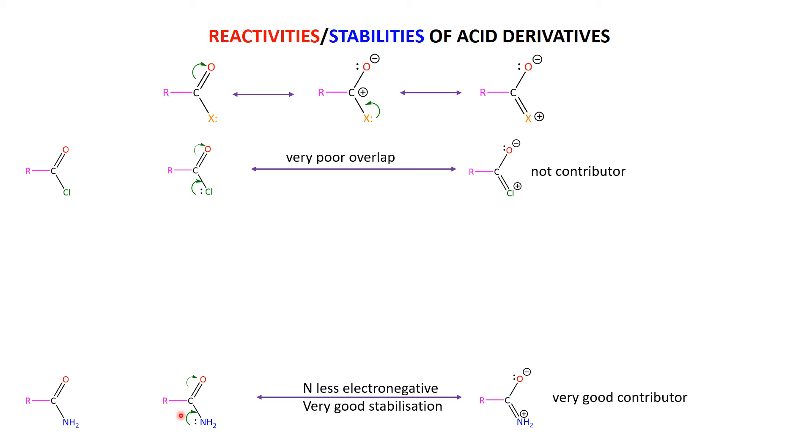So what that means is that this is a very good contributor for an amide. And so therefore, the amide is extra stable. The amide is less reactive. So again, reactivity, amide less reactive, acid chloride most reactive, because the stability goes the other direction. The acid chloride unstable or not stabilized by this contributor, the amide stabilized by spreading those electrons around.